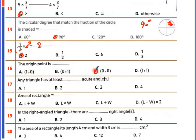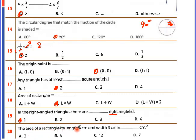The origin point is (0, 0). Any triangle has at least two acute angles. In a right-angle triangle, there is only one right angle. The area of a rectangle with length 4 and width 3: area equals length times width, 4 times 3 equals 12 centimeters squared.